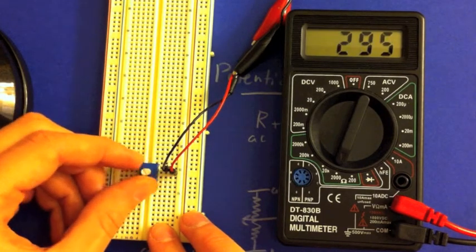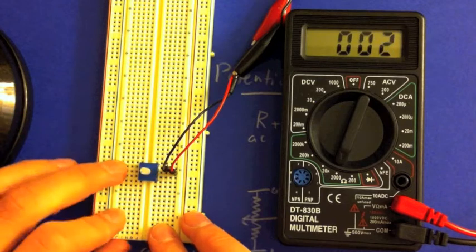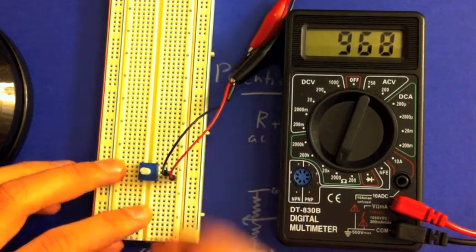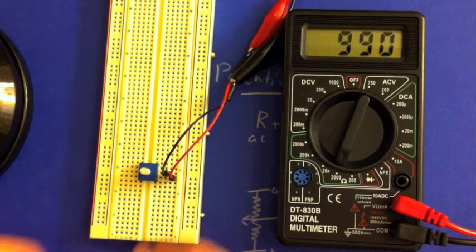Turning the knob in the other direction will cause C to move towards A, and the resistance to go down. Measuring the resistance between C and B will yield the same results as A and C, except with the direction of the knob inverted.